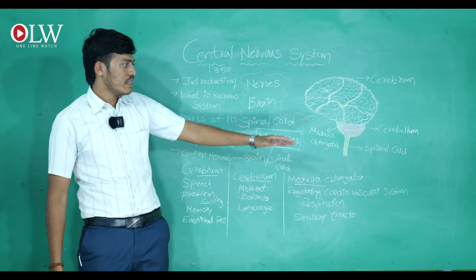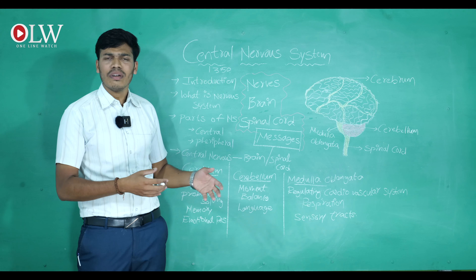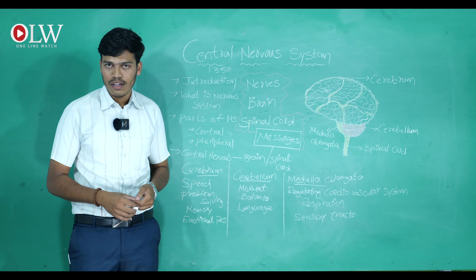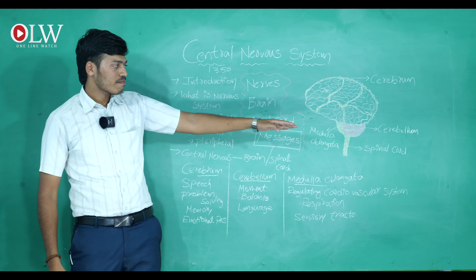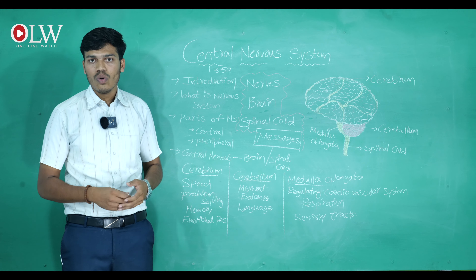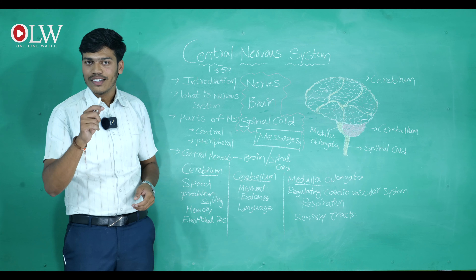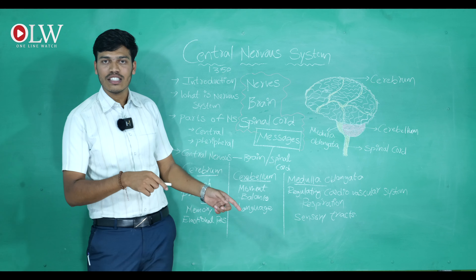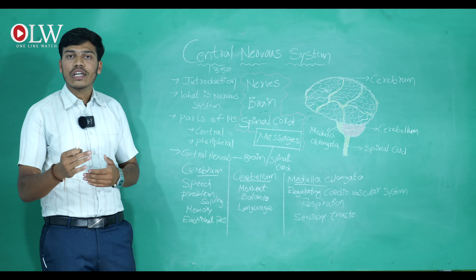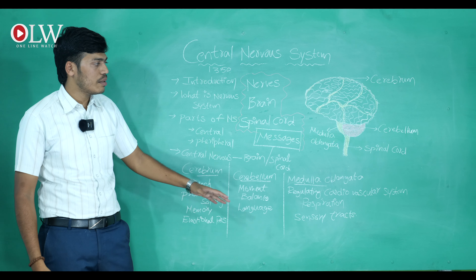Another function associated with the brain is language. Language is the key to communicate with others. Most people who learn more languages have those languages fed and memorized in the brain. Did you know how many languages a normal human individual is able to speak? If you know, comment below. Those languages are simply memorized in the brain's second largest part, the cerebellum.